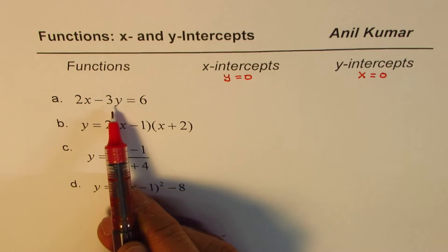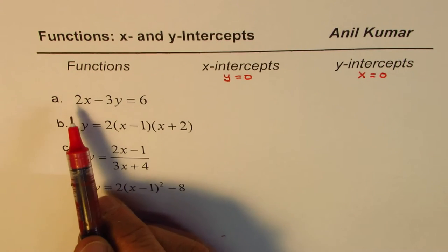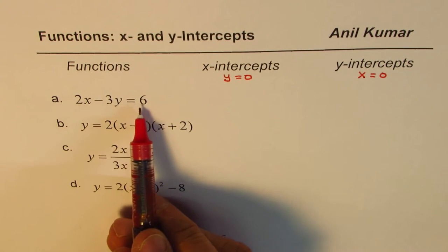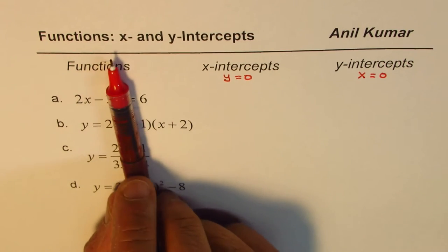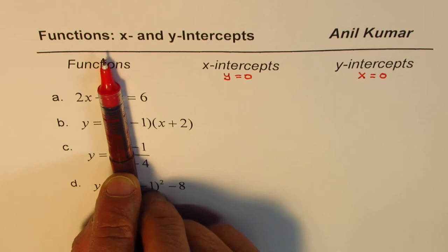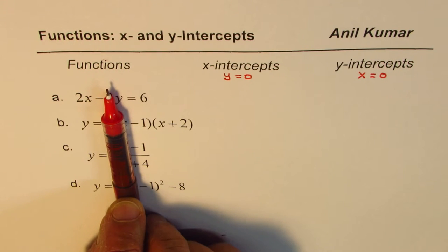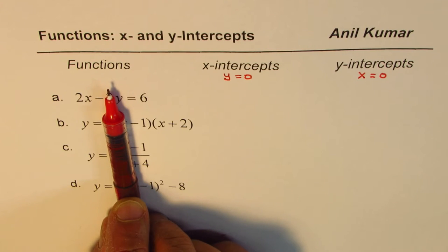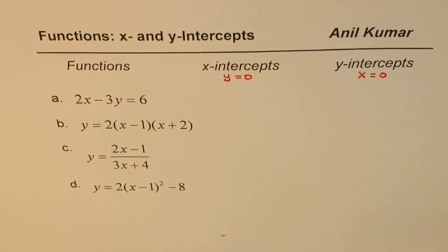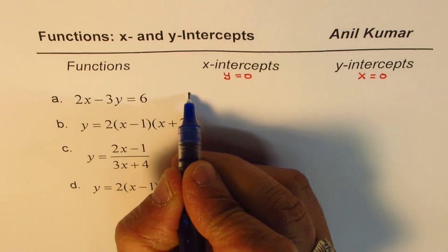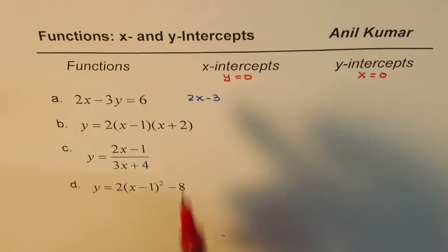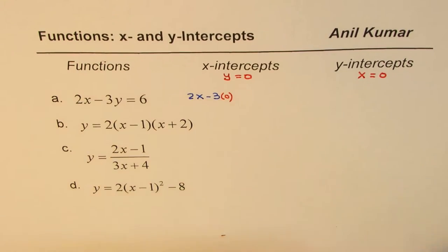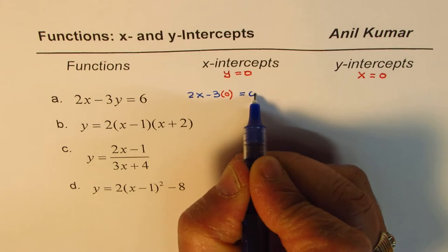The first one is a line which will have both intercepts. We have 2x minus 3y equals 6. To find the x-intercept, I'll substitute 0 for y — I can hide the y term. So I get 2x equals 6, x equals 6 divided by 2, which is 3. So we substitute 0 for y and solve for x — that's the technique. We get 2x equals 6 and that gives x equals 3.